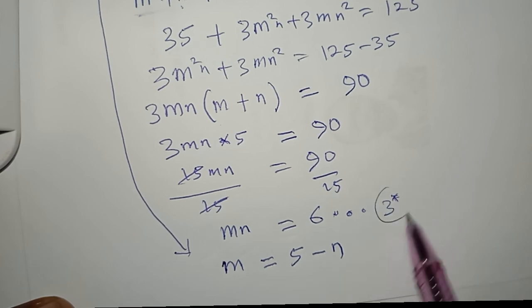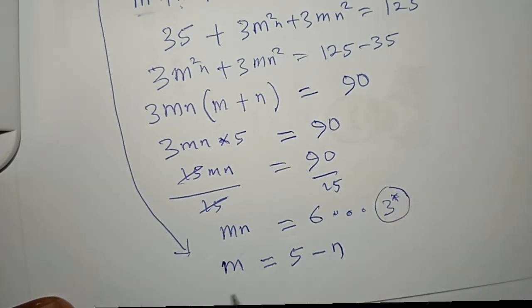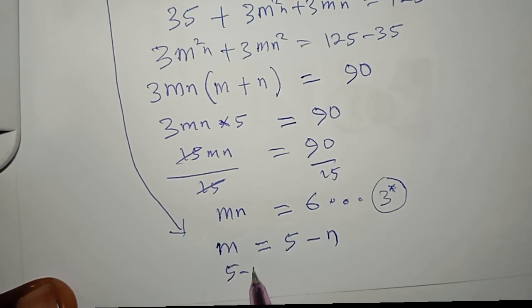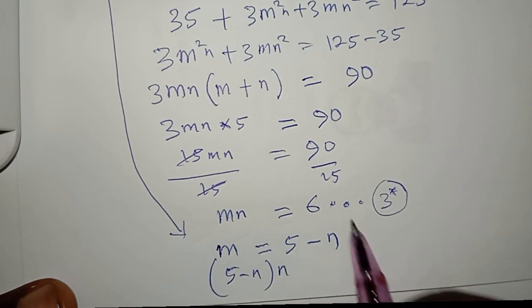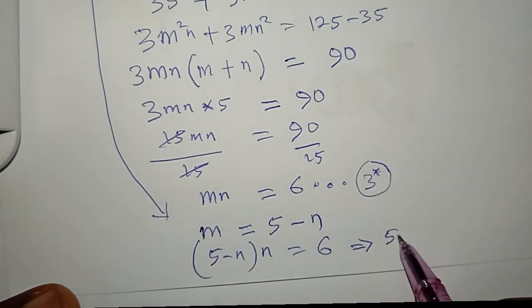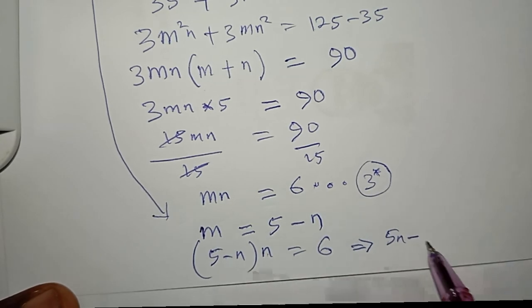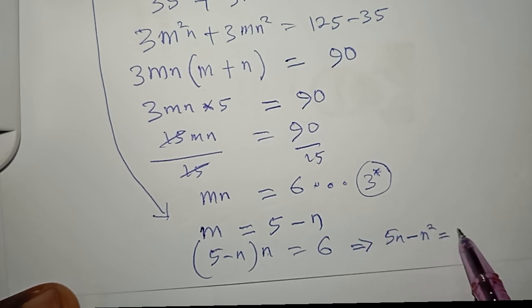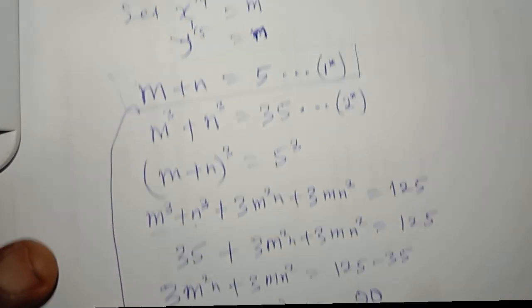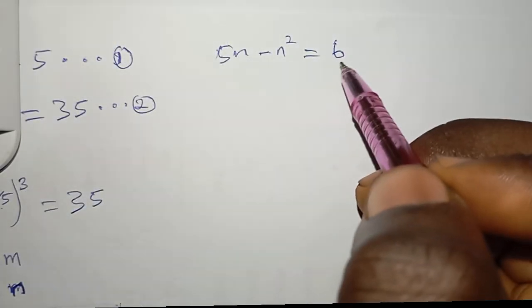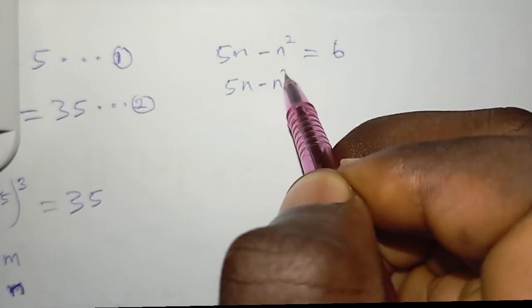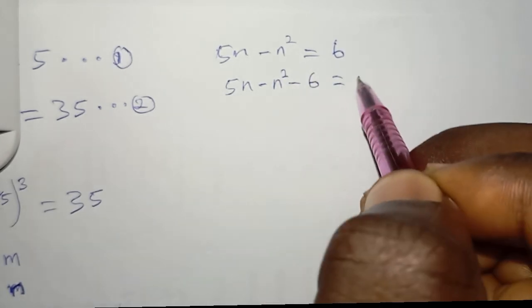Substituting m = 5 − n into mn = 6 gives (5 − n)n = 6, which expands to 5n − n² = 6. Moving 6 to the left: 5n − n² − 6 = 0.